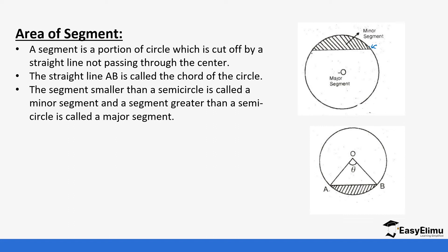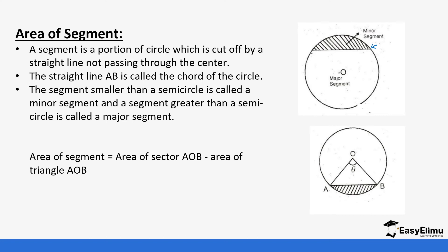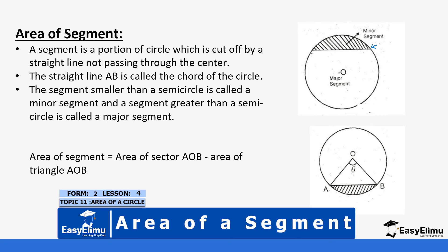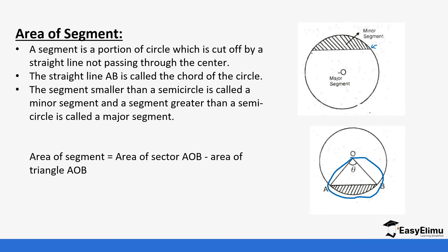Looking at what we discussed before on the area of a sector, remember we saw there is this area. This is now the area we are mentioning in this case. The segment that has a small semi-circle is the minor, and the bigger one is the major. To calculate the area of the segment, we get the area of the whole sector and subtract the area of the triangle, and we are left with the small segment.